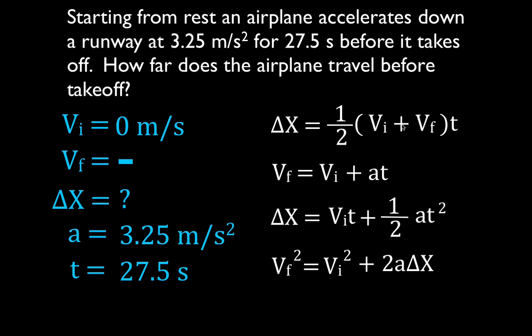Does the first equation have delta x? Yes, it does. But we also need to know the other three variables in the equation. We're solving for delta x — do we know the initial velocity? Yes. Do we know the final velocity? No. If we don't know one of the other three variables, we cannot use that equation. So we move on to the next one.